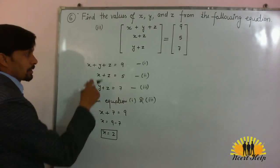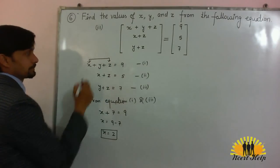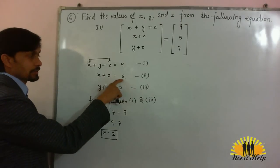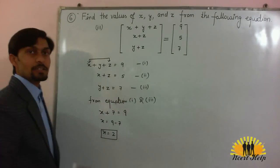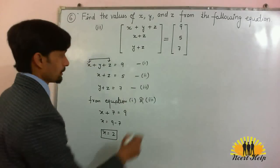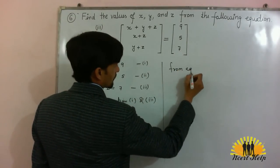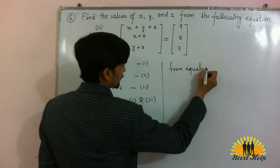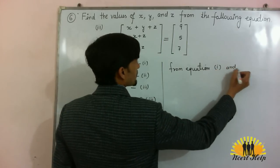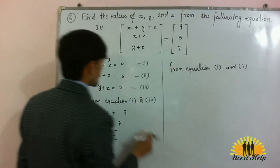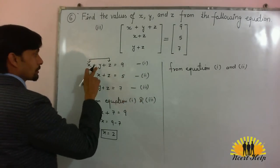Now in the first equation, in place of x plus z, we can write 5. According to equation 2, x plus z is equal to 5. So we write from equation first and second. Now x plus z is 5 in second equation, put in equation number 1.